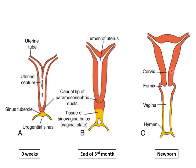The uterus is fully formed, the vaginal fornices and the lower part of the vagina develop, and here we have the hymen. The fornix is the uppermost portion of the vagina and is formed by vacuolization.